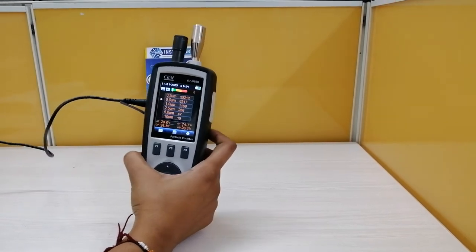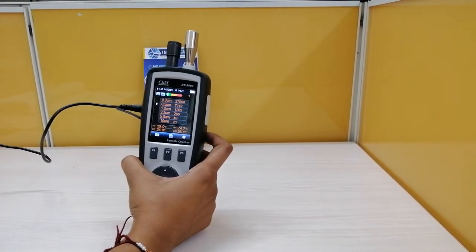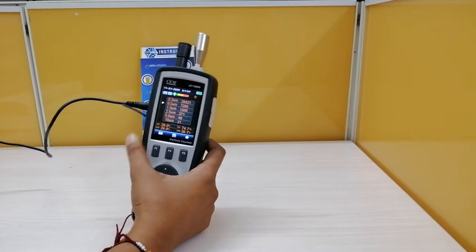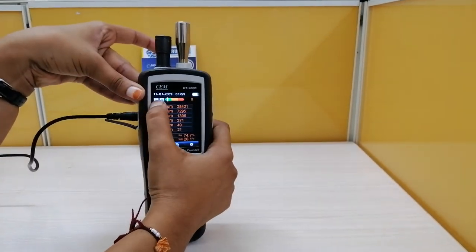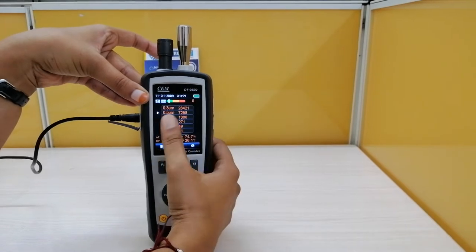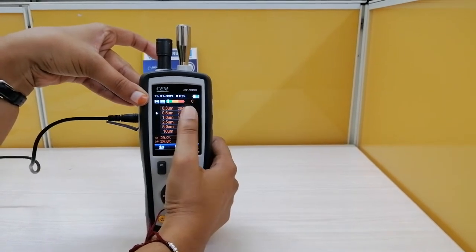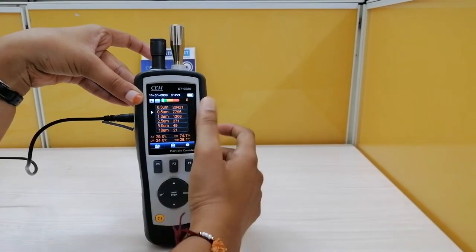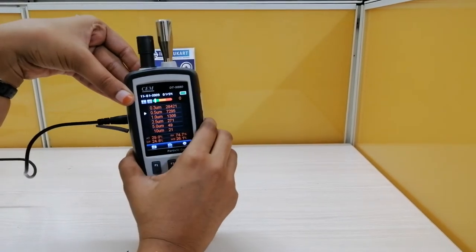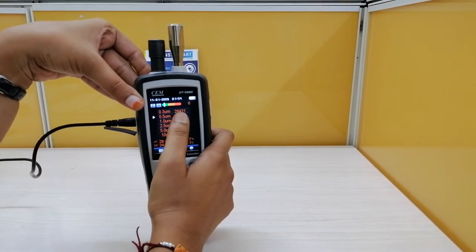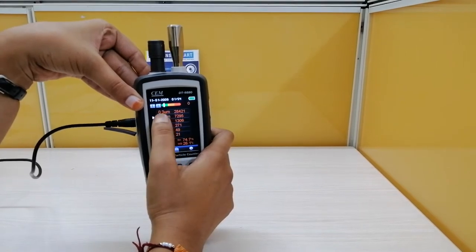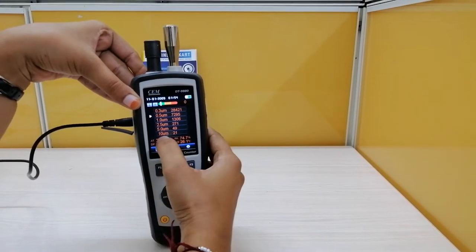This particle counter measures based on the sampling time and flow rate. You can see here this is in cumulative mode. This is the symbol of cumulative mode. And 0.3 microns shows 28,421. It means as the particle counter measured in cumulative mode, the 28,421 particles are there in between 0.3 to 10 microns.